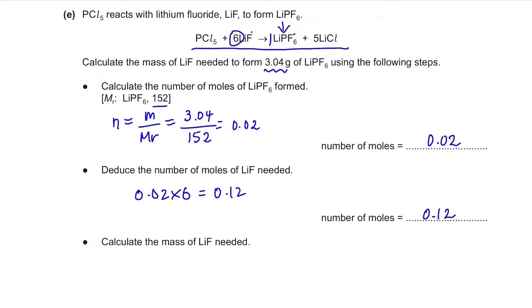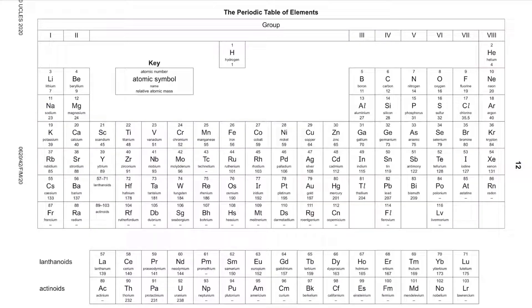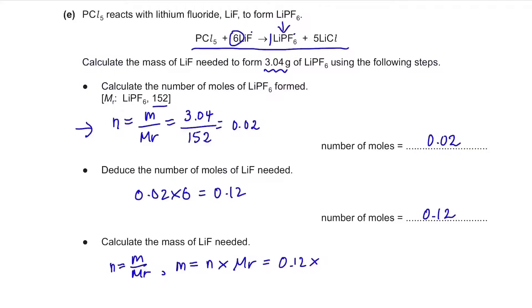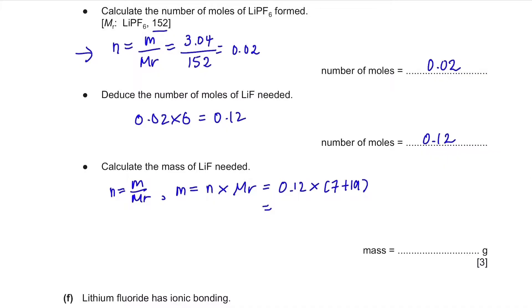Calculate the mass of LiF needed. So we're going to use this same equation, number of moles equals mass over MR. But this time we're finding the mass, so it can be rewritten as mass equals the number of moles times MR. The number of moles of LiF is what we've just calculated, 0.12 times the MR. So if you look at the periodic table, Li is over here and its molecular mass is 7. And fluoride is over here and its molecular mass is 19. So to find the molecular mass of LiF, we just have to do 7 plus 19. And if we use our calculator to calculate this, you'll get 3.12.